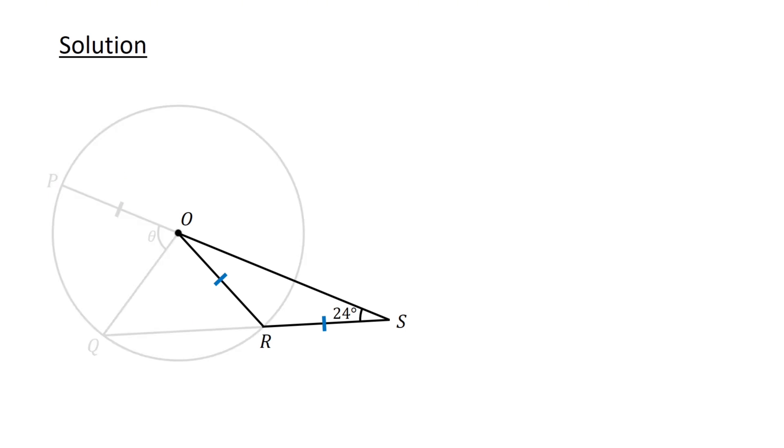Next, let's focus on triangle OSR. Since the length of OR equals the length of RS, the triangle is an isosceles triangle.